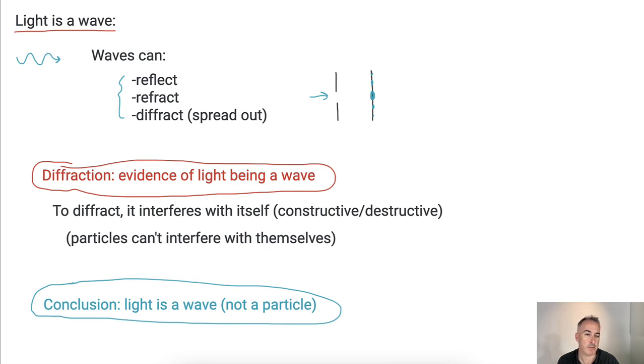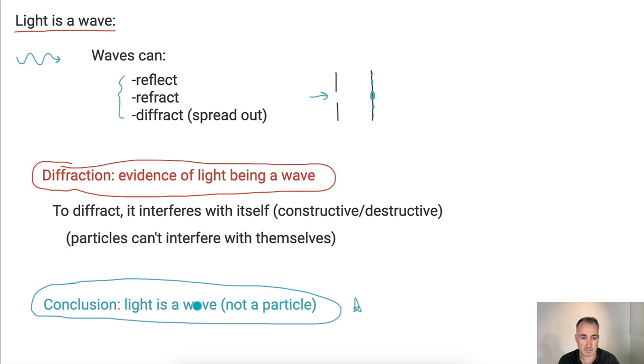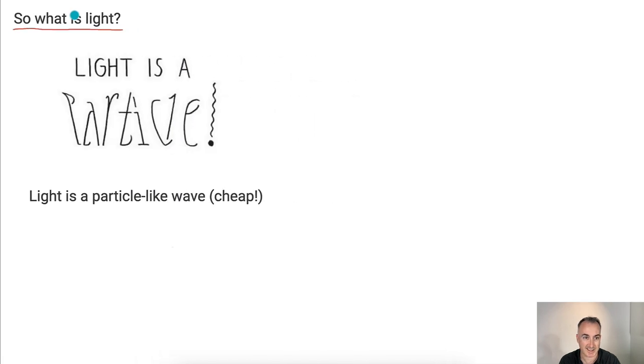But do you realize we have a problem now? We just said before that because of photoelectric effect, light has to be a particle, can't be a wave. Correct. And because of diffraction, light has to be a wave, not a particle. Also correct. What? Do you understand? This is really strange, isn't it? That means light must sometimes act like a wave, sometimes act like a particle. So what is it?